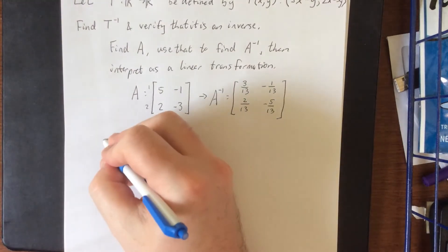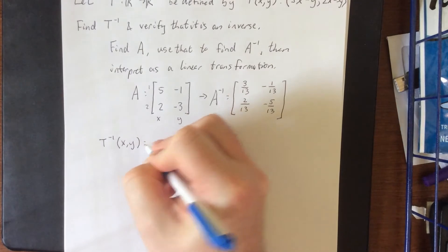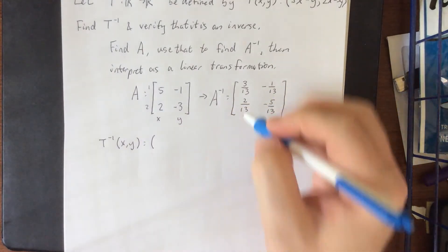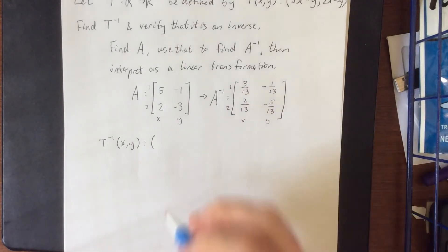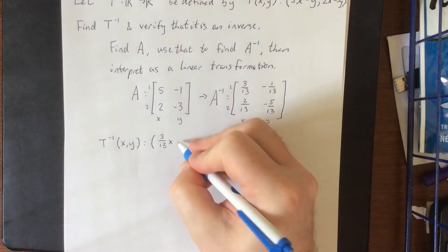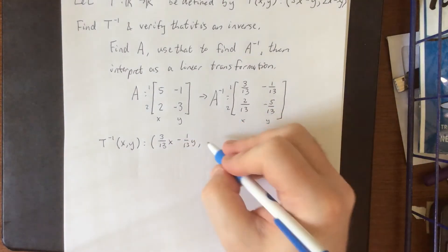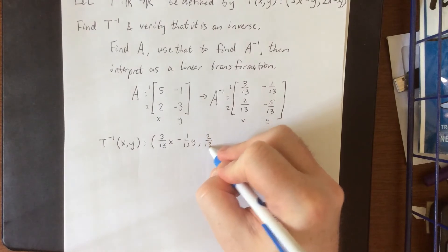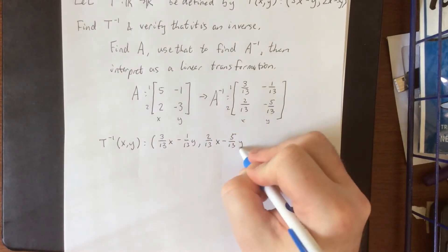So we can interpret T inverse of (x,y) in the following fashion. Here's your first component, second component, coefficient of x, coefficient of y. So this will be 3/13 x minus 1/13 y, and for the second component we'll see 2/13 x minus 5/13 y.